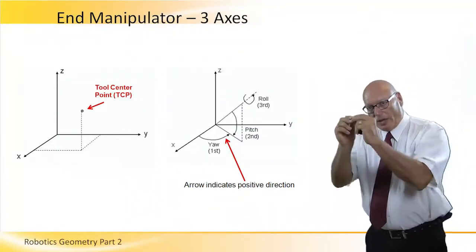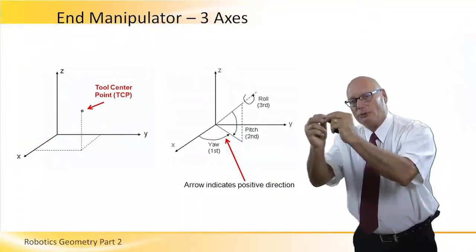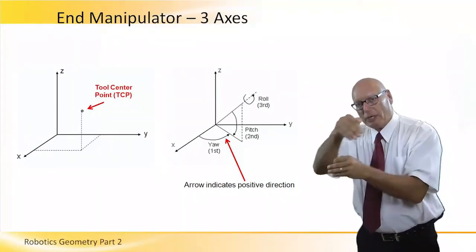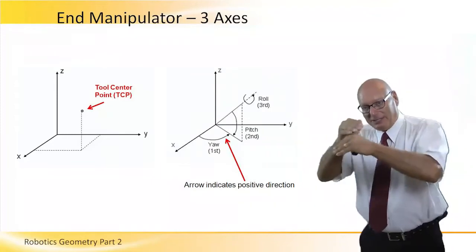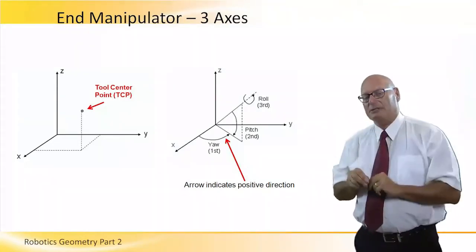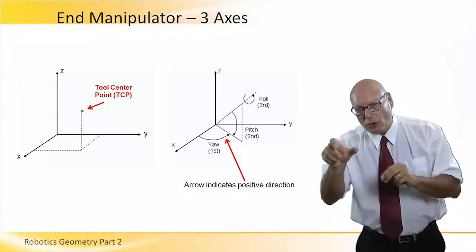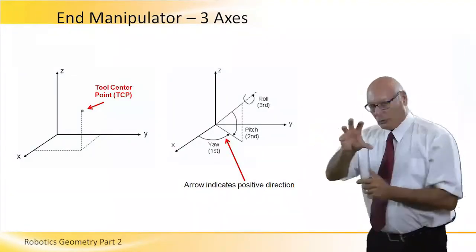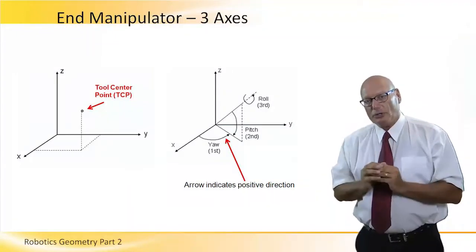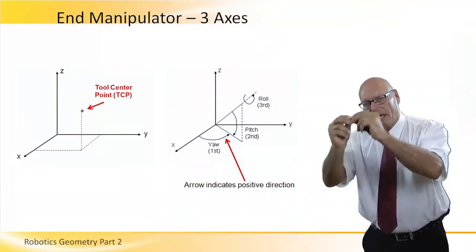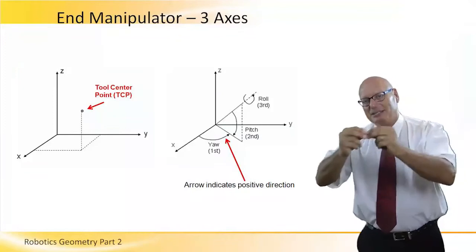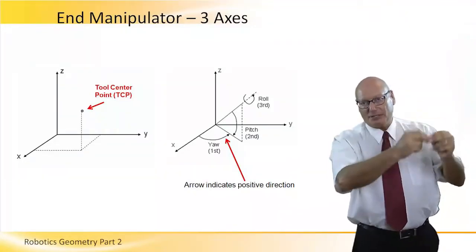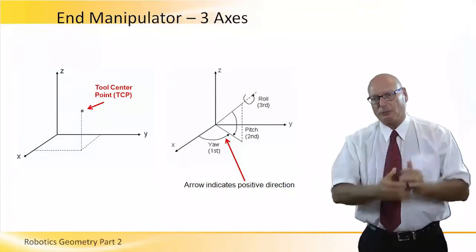We are at the end point of the robot where we have fingers. Within those fingers we have the TCP. This is the point within the fingers that we need to contact the object we want to move. So we will roll, pitch, and yaw to get to that point where the TCP is at the center of gravity of the object we are picking up.